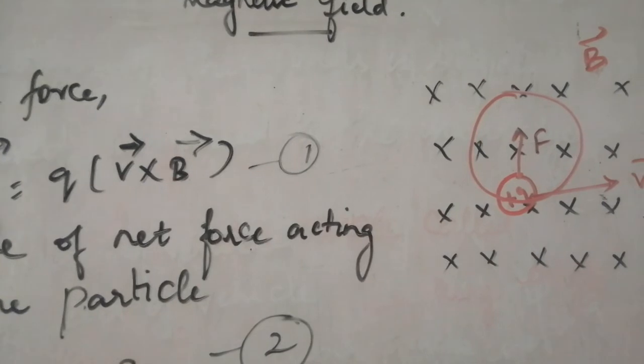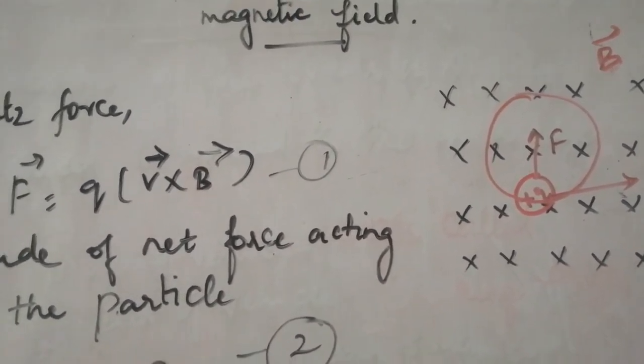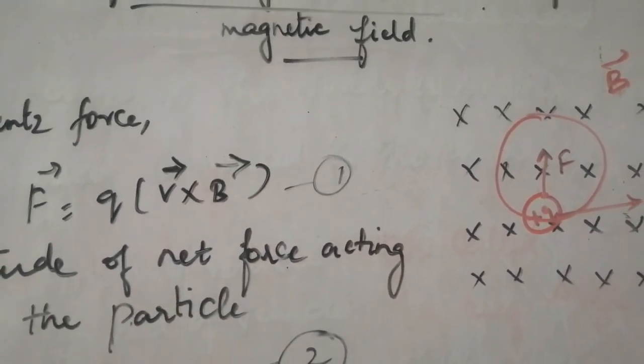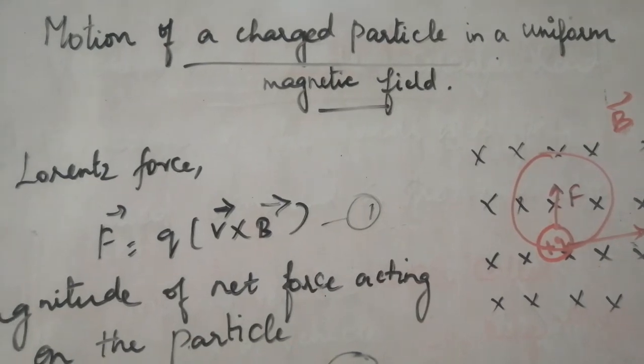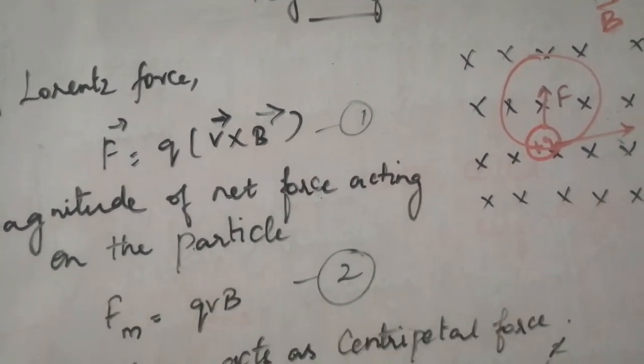Then if it is varying, the direction of the charged particle cannot be exactly in the circular path. So it will make a helix path actually. So this is what is all about motion of a charged particle in a uniform magnetic field. I hope you have understood.